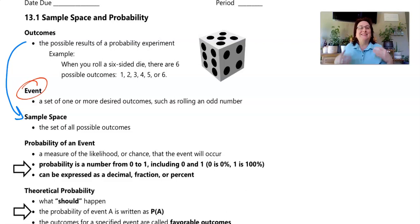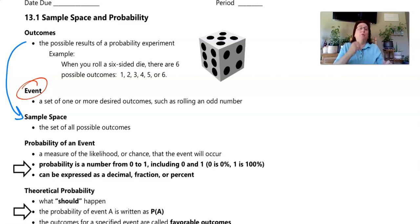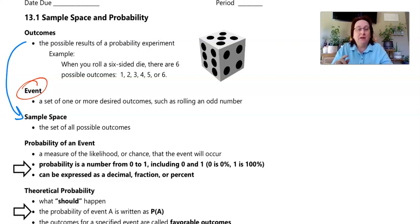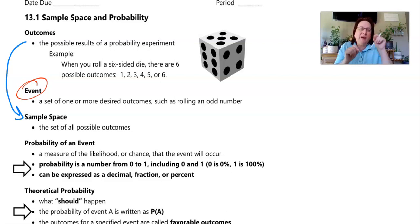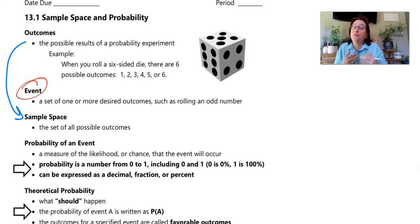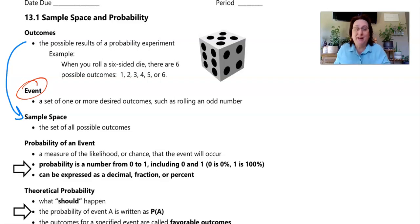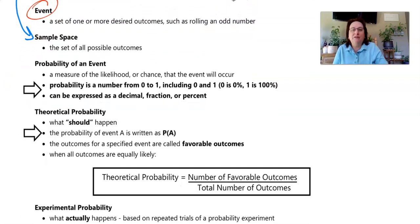Now, when we talk about an event, an event is a set of one or more desired outcomes. For example, if I roll a six-sided die and I want to know the probability of rolling an odd number, that's the event I want to happen. When we talk about an event, we're talking about the probability of just that one thing happening. As we get further into probability, we'll start talking about two or three events happening at the same time.